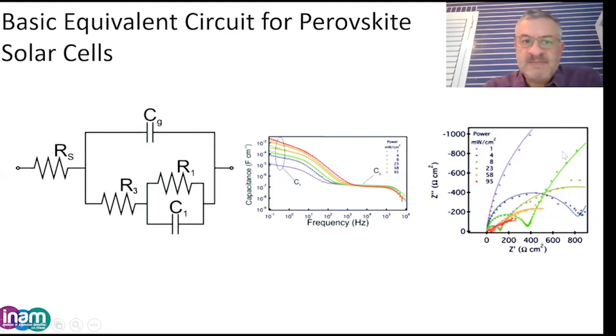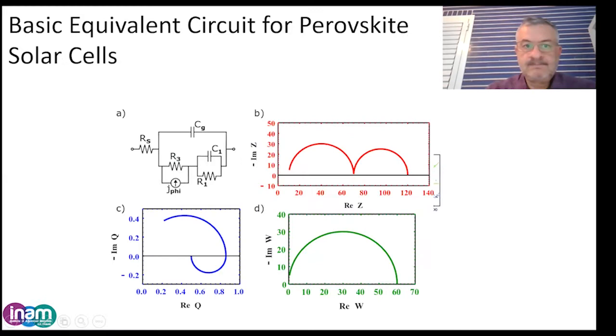There is a basic equivalent circuit for perovskite solar cells regarding the two arc spectra. It has a geometric capacitance, low frequency capacitance, and two resistances in series and parallel. This accounts for the high frequency plateau related to the electric relaxation of the perovskite and the low frequency large capacitance.